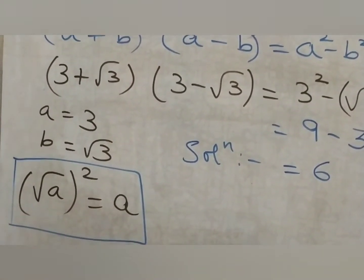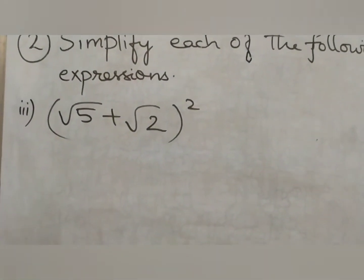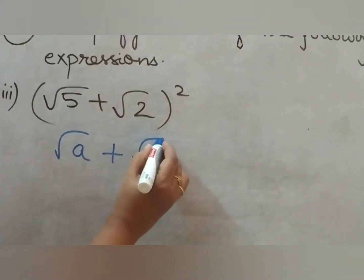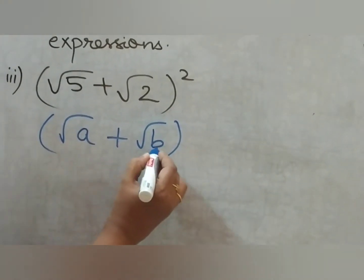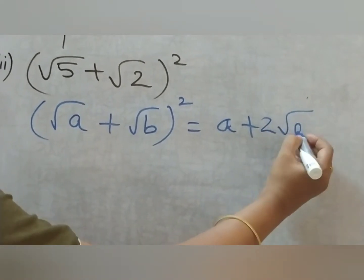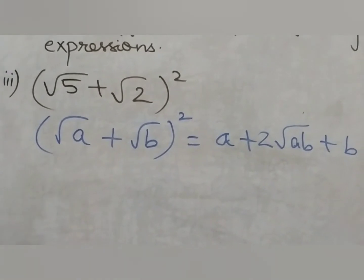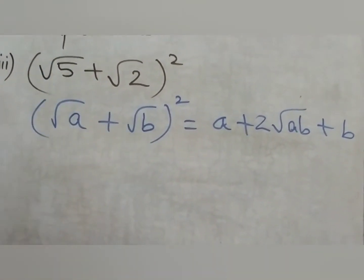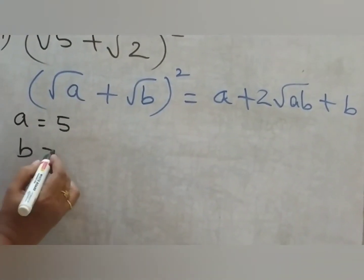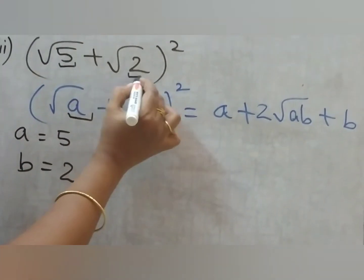The third problem is (√5 + √2) the whole square. For this you can use the formula: (√a + √b)² = a + 2√(ab) + b. If you use this formula, the problem becomes very simple. Here a will be 5 and b will be 2.